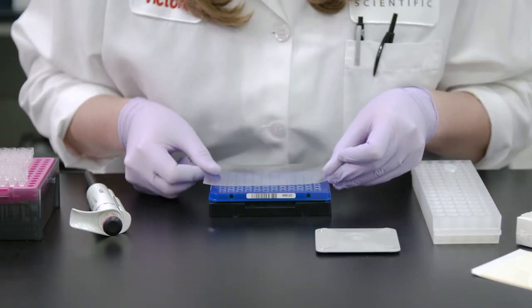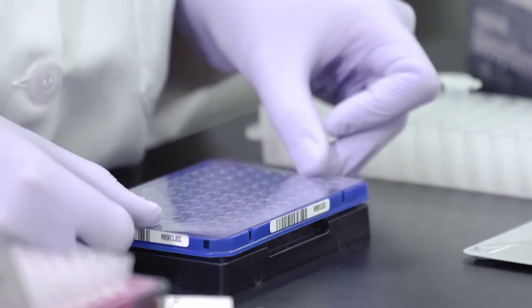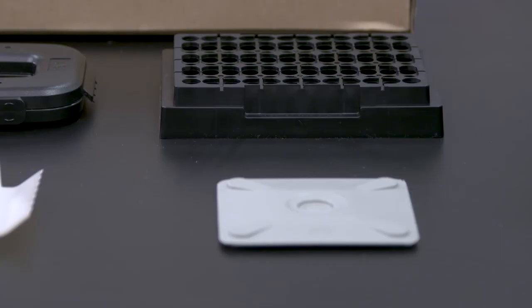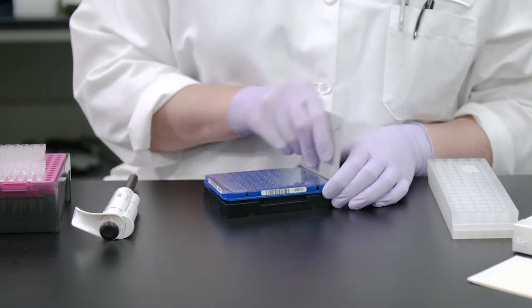Next, align the adhesive film on the plate so that all the wells are covered. Using the adhesive film applicator, press and move the flat edge of the applicator back and forth along the short edge of the plate.